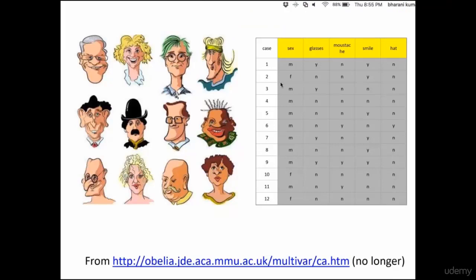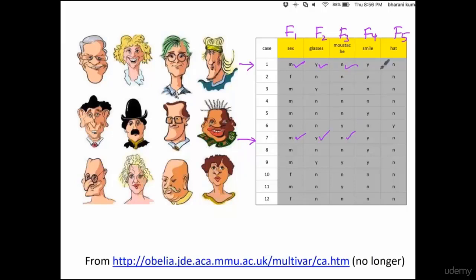The question we need to solve is: out of these 12 records, what are those records you want to cluster together? You have five features. If you look at record 1 and 7 — both are male, both do not wear glasses, both do not have a mustache, both have a smile, and both do not have a hat. Given these conditions, you can probably cluster these two together because each and every feature is the same. In certain scenarios, a few features might not match but you might still want to cluster. Given this example, you want to group person 1 and 7 together.